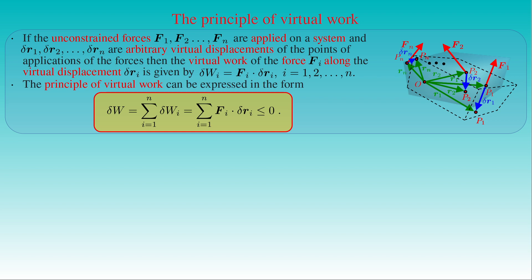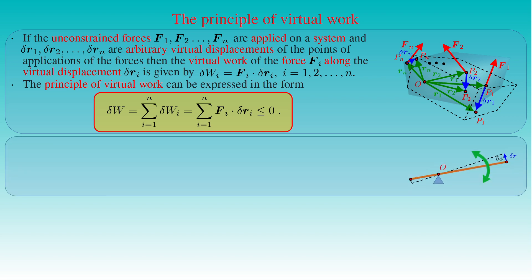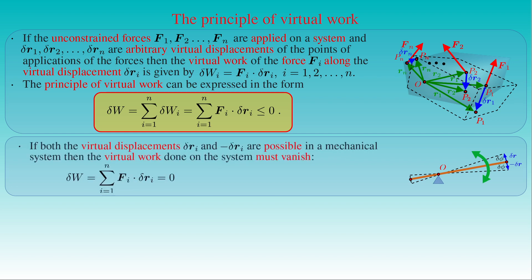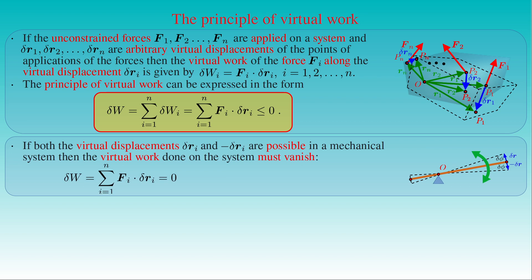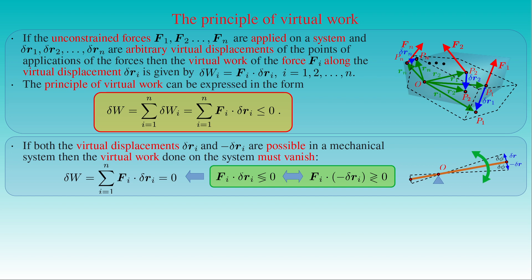For many mechanical systems — like a lever — any virtual displacement ΔRi of the beam determined by rotation angle ΔΦ has its opposite displacement −ΔRi also allowed by the constraints. Since the displacement is infinitesimal, ΔR and −ΔR are tangent to the circular trajectory of points on the rotating beam but opposite in direction. Both ΔRi and −ΔRi are valid virtual displacements, so the virtual work must vanish: if the work along ΔRi were negative, it would be positive for −ΔRi, and vice versa.